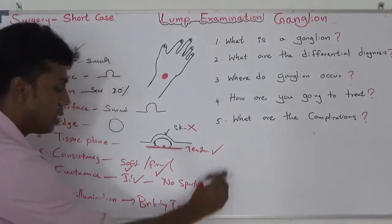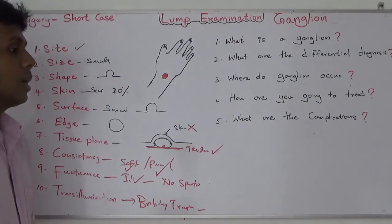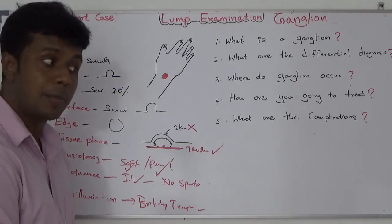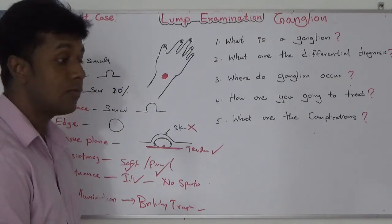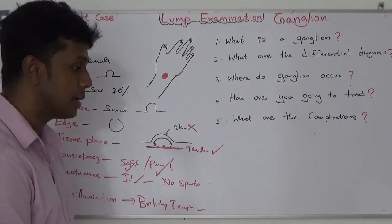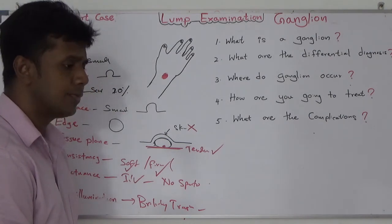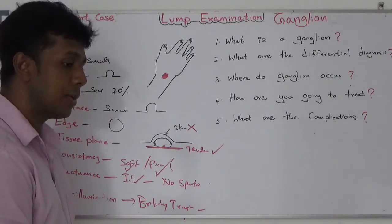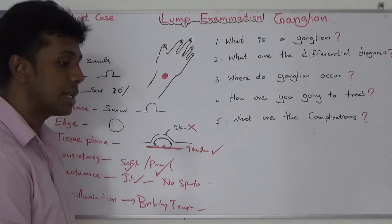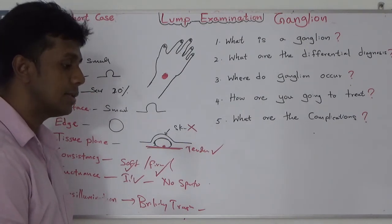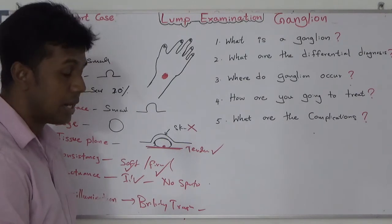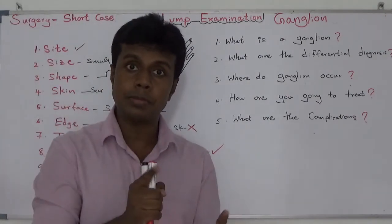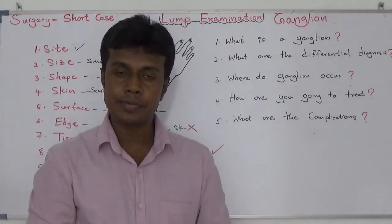Now to present: keeping the hand like this — there is a hemispherical-shaped lump over the dorsum of the hand measuring 1.5 centimeters in diameter. Surface is smooth, edges are well defined. It is not attached to the skin but is attached to the underlying extensor tendon. It is soft in consistency, fluctuant, and brilliantly transilluminating. My probable diagnosis is ganglion. I would like to offer surgery under a bloodless field.